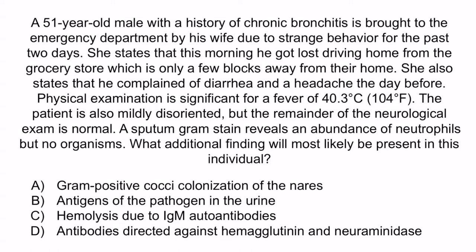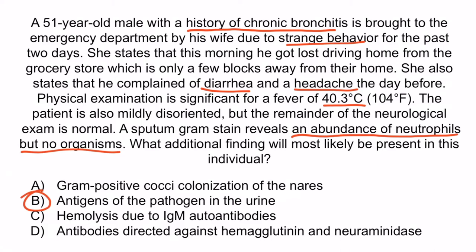There are several key clues from the question stem that should have helped you come to the correct answer. First, the patient has a history of chronic bronchitis. Second, he has CNS abnormalities, including altered behavior and a headache. Third, he has diarrhea. Fourth, he has a high fever of 40.3 degrees Celsius. And finally, a sputum gram stain revealed an abundance of neutrophils but no organisms. Collectively, these clues are highly suggestive of Legionella, leaving us with one correct answer, which is B — antigens of the pathogen in the urine.